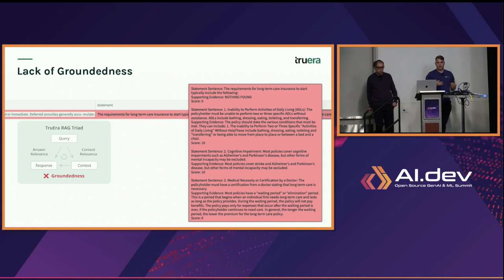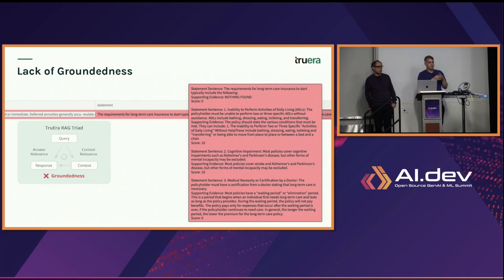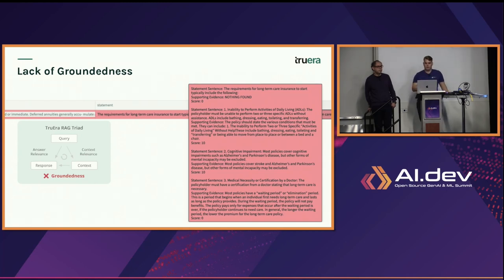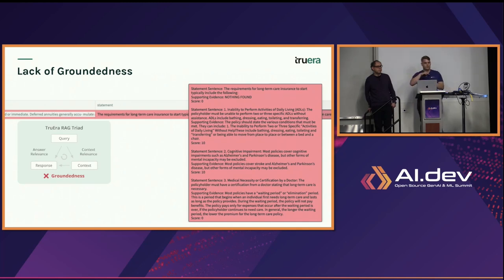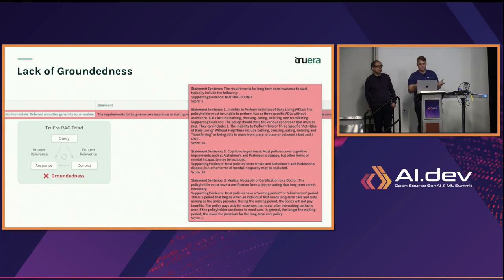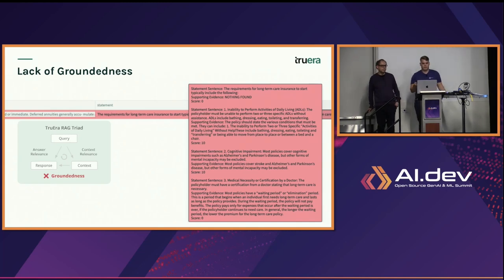We can also have issues with groundedness. Here we have an LLM response and we can break it down into the different claims the LLM is making, then look for evidence to support each one. You can see the top and bottom sentences are scored as zero in groundedness, while the middle two claims are scored as ten. This gives us an overall groundedness score of 0.5, with hallucination mixed in — not something we'd want.